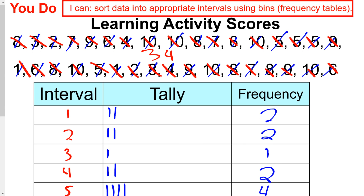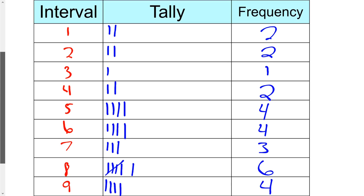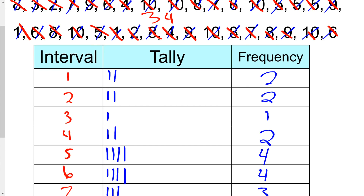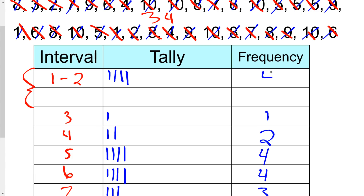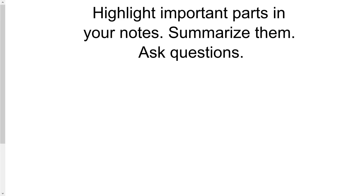Jumping back to the earlier problem — those intervals each only had a width of 1 because each interval contained just one number. But I can join two intervals together. For instance, between 1 and 2 there were two 1s and two 2s, making a total of 4. But I can't mix widths — if I combine some intervals to width 2, all the other intervals also have to have a width of 2.